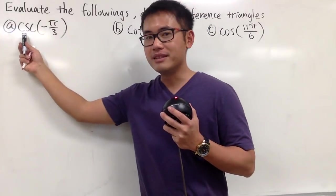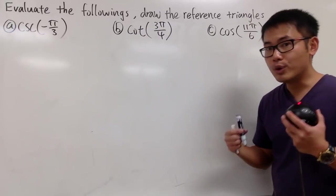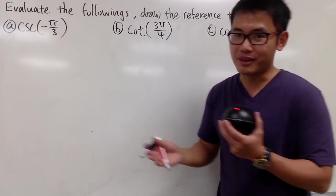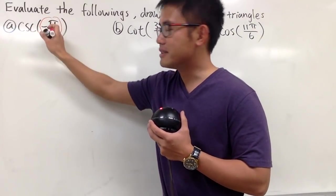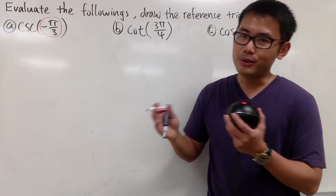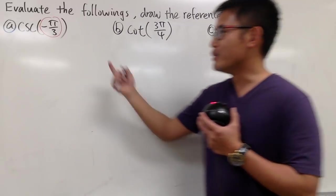First of all, this is cosecant of negative pi over 3. Remember, we have to come up with a picture first, and we have to know what angle is so we can turn. We can just change this from radians to degrees because we know how to draw in terms of degrees much better than radians.